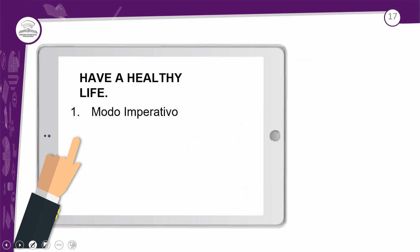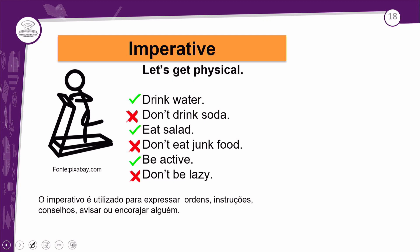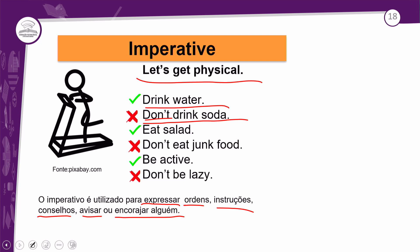Temos a última aula sobre o modo imperativo. 'Have a Healthy Life' foi o título da aula — e o imperativo é a coisa mais simples do mundo. 'Let's get physical' — vamos malhar. O imperativo é utilizado para expressar ordens, instruções, conselhos, ou para avisar ou encorajar alguém. Dependendo do tom, você navega entre ordens, instruções e conselhos. Exemplos: 'Drink water', beba água. 'Don't drink soda', não beba refrigerante. Quando tem o 'don't' na frente do verbo, com o auxiliar e a partícula negativa 'not' na forma contraída, temos a negação no imperativo.